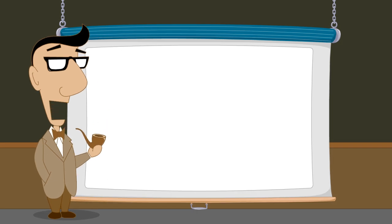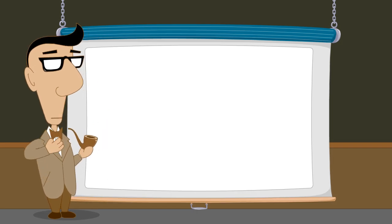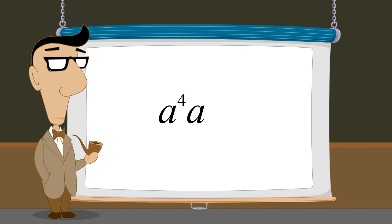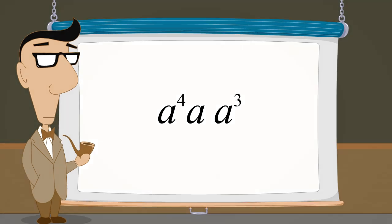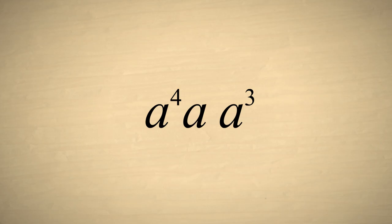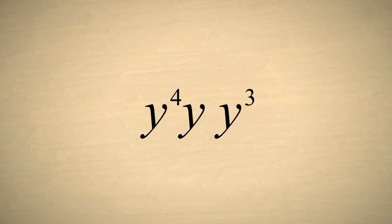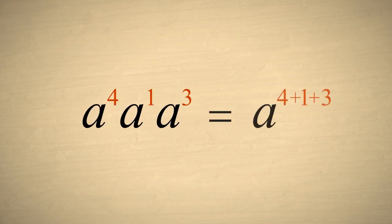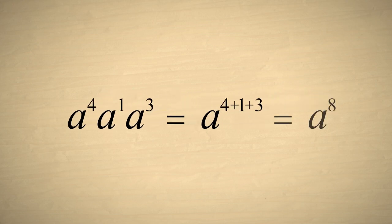Now let's simplify an expression with three terms a to the fourth times a times a cubed. Remember that it doesn't matter what letter is used for a variable. There is no difference between using an a or an x or any other letter. We start by writing the a without an exponent as a to the first power so we can add the exponents. And adding the exponents we get a to the eighth power.